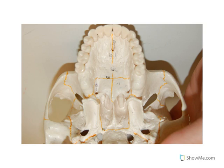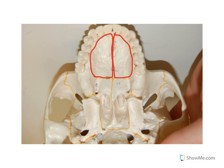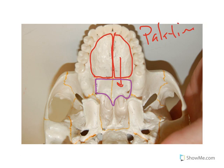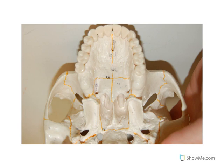On the maxillary bone we can see a structure referred to as the palatine process of the maxillary bone. The palatine processes are here because they process towards the palatine bone. In red is the palatine process of the maxillary bone.